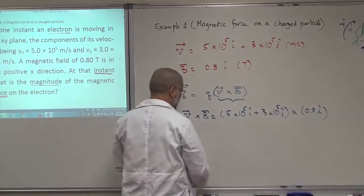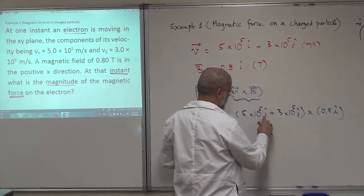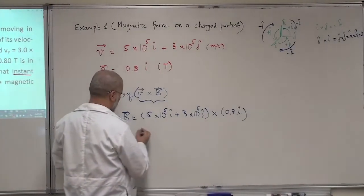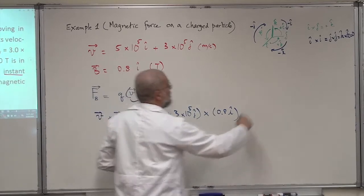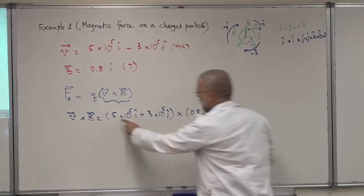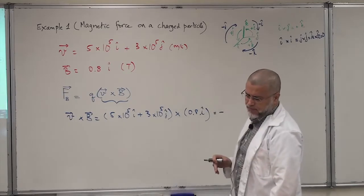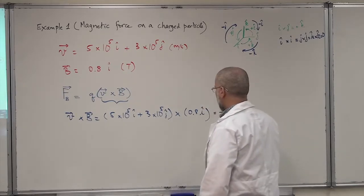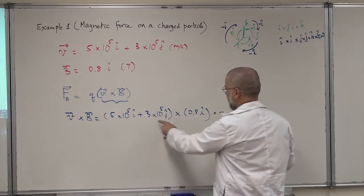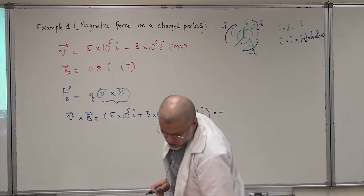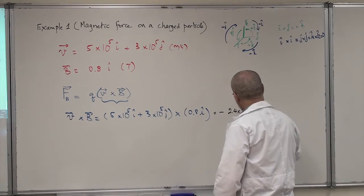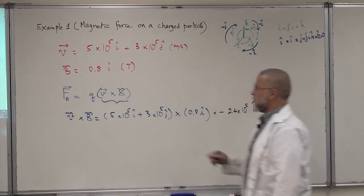Let's apply this rule. Starting with the first vector component: I cross I gives me zero, so I don't write it down. And J cross I gives you minus K, so this gives me a minus sign — 5 times 0.8 is... J cross I is minus K, giving minus 2.4×10⁵ K. You need the vector K here because the cross product gives you a vector, while a dot product gives you a scalar.